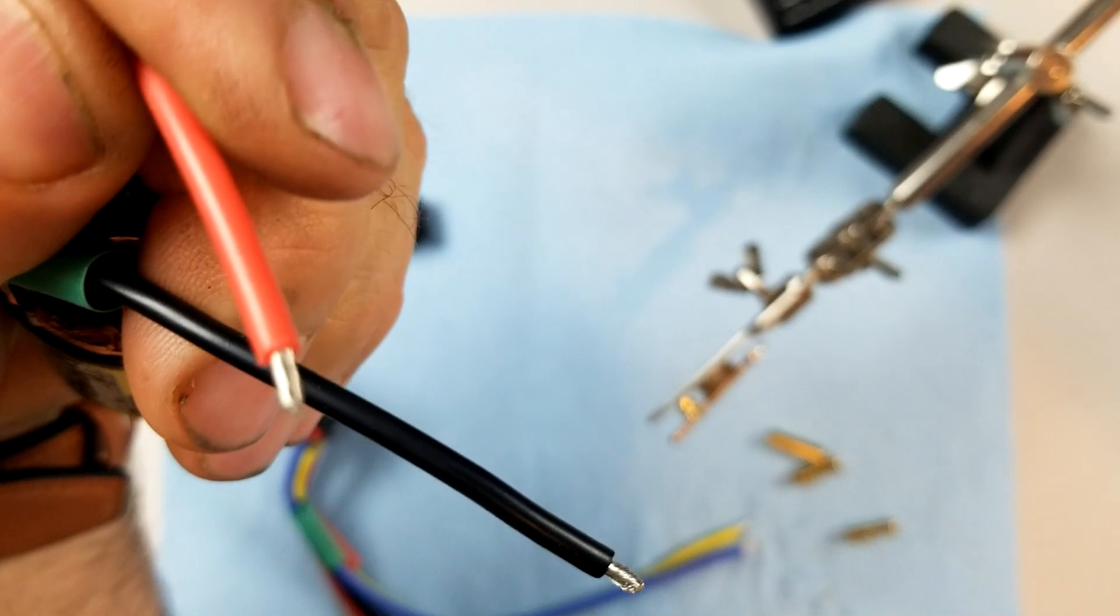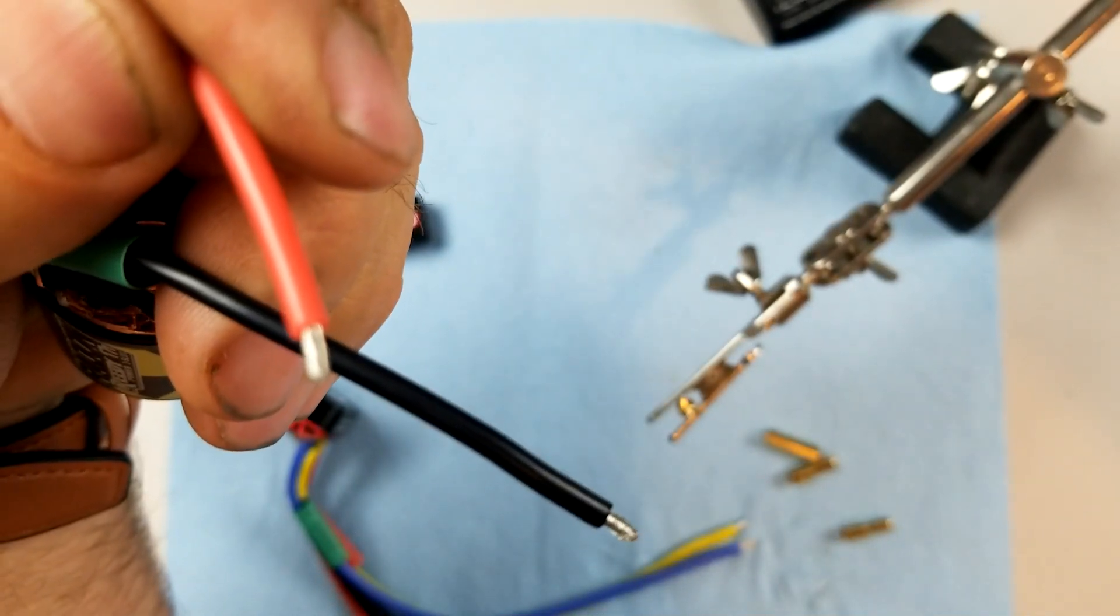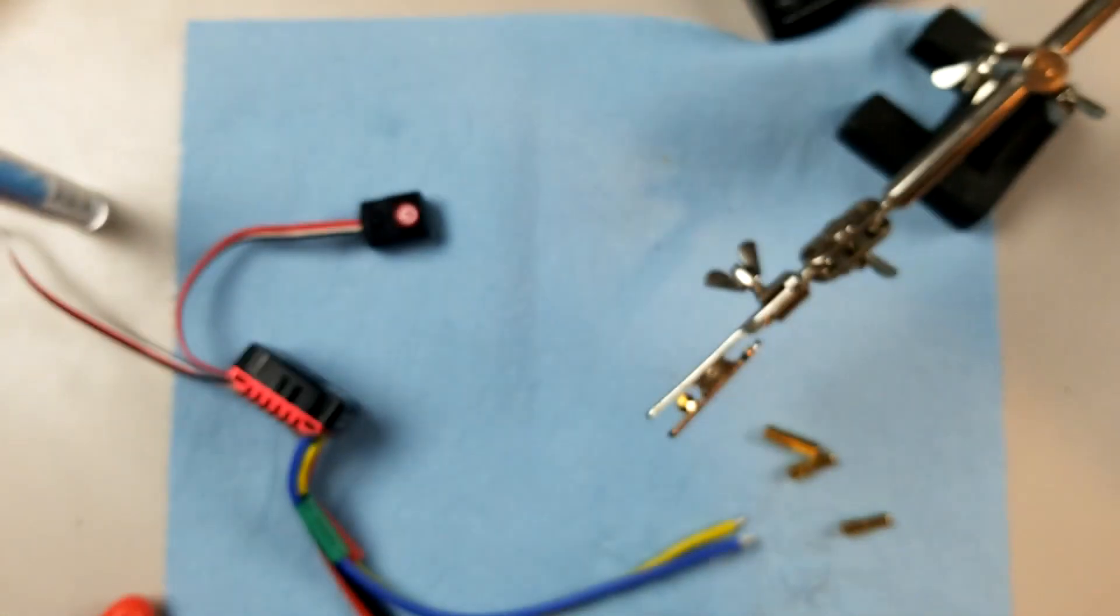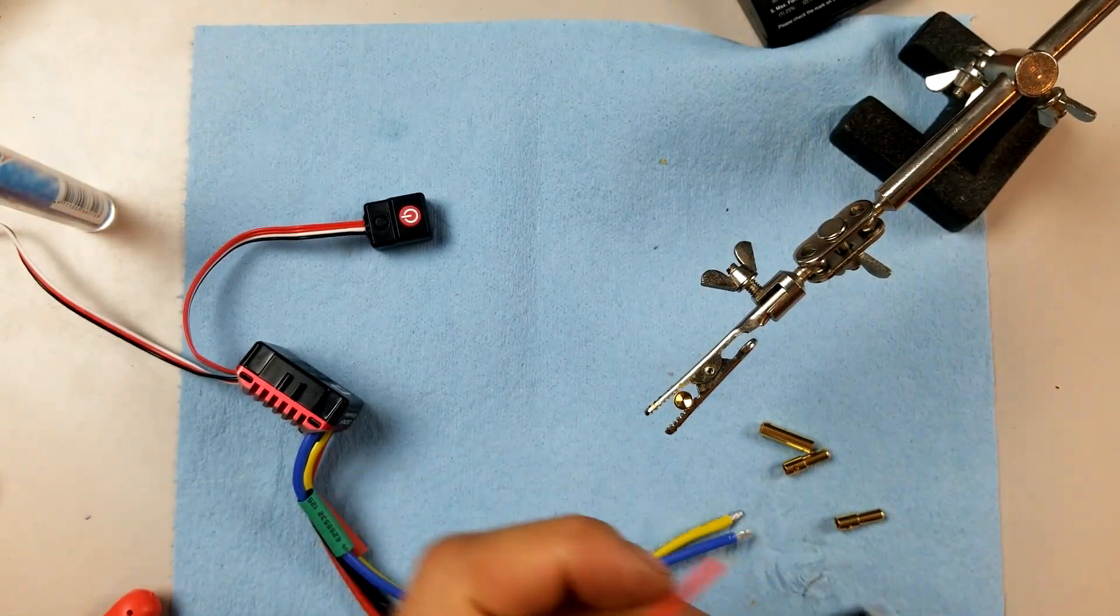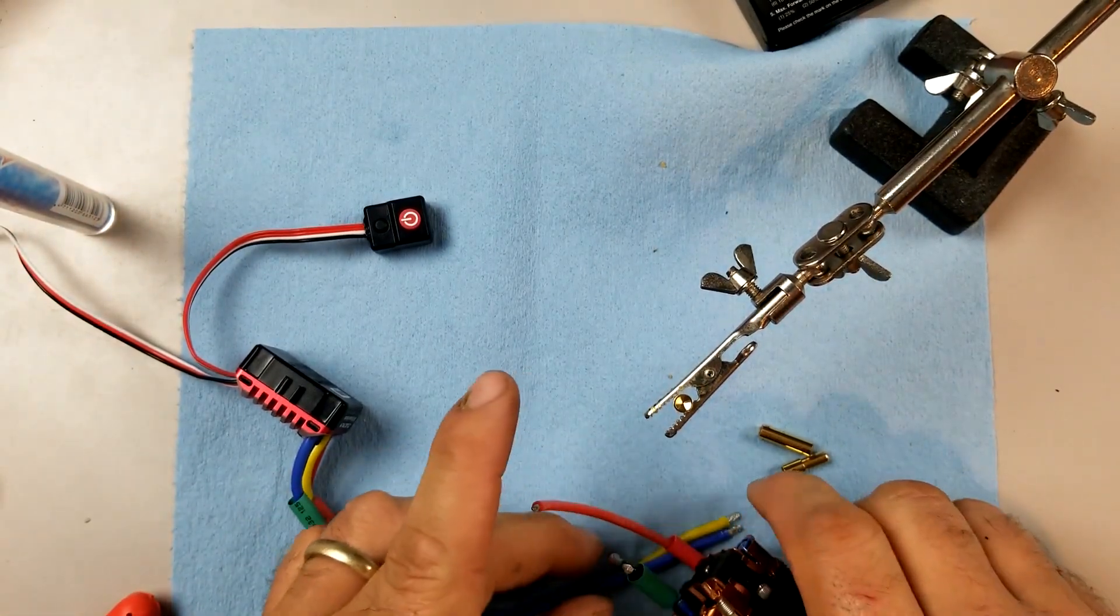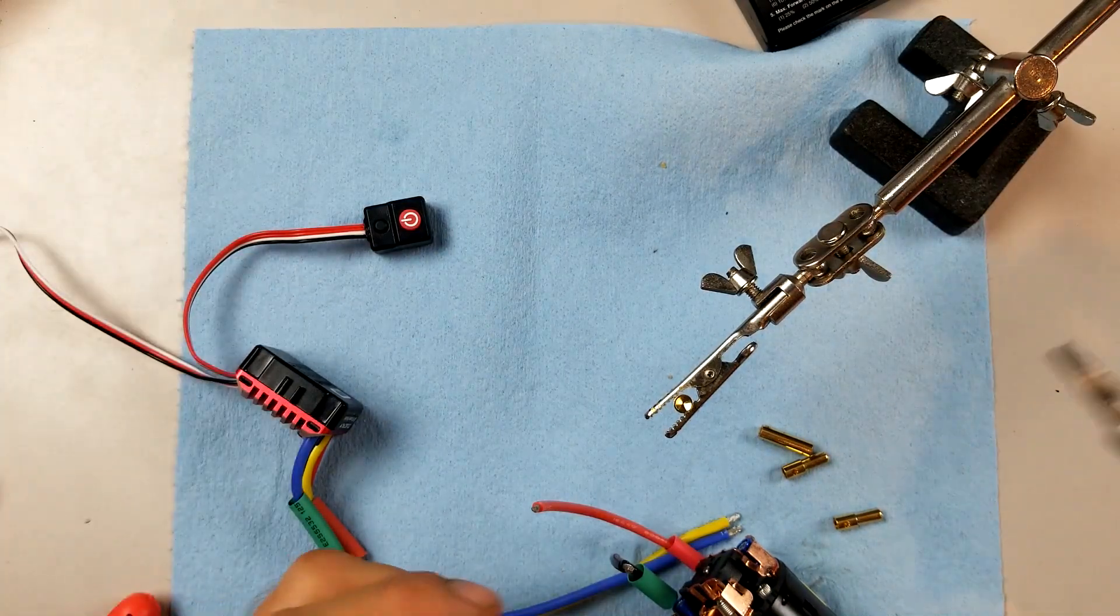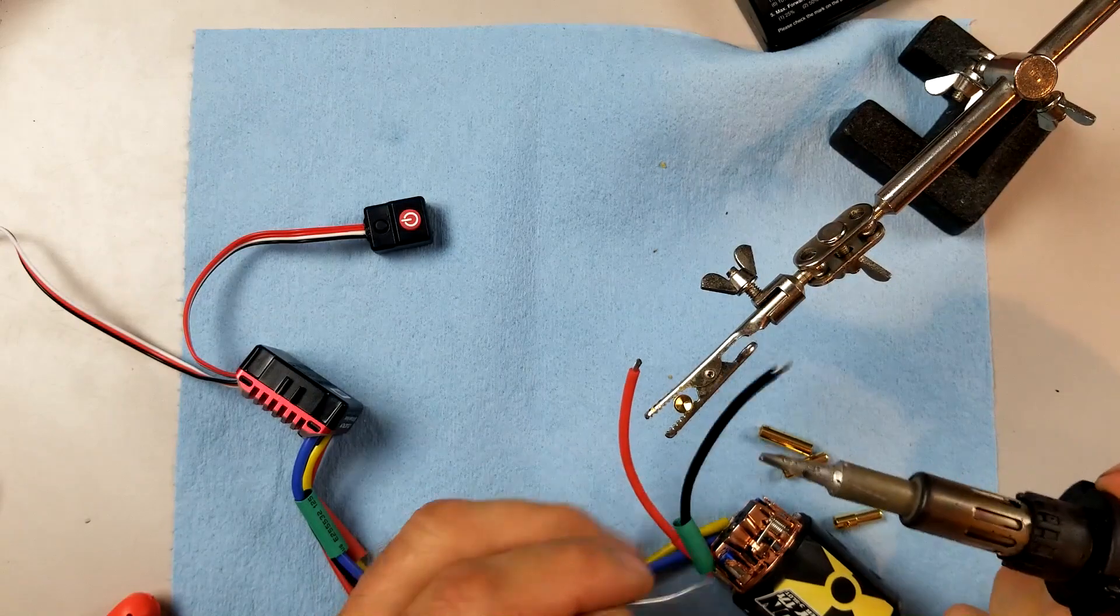These are not pre-tinned with anything. So you have to, pre-tinning means you're going to heat it up and put some solder on the wire before you even weld it.